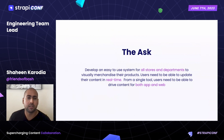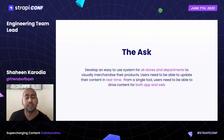This is where Strapi fits into the equation. In order for stores to visually merchandise their products, they needed a system to update their content in real time. With all hands on deck rewriting our app and website, we needed to leverage a solution that would allow us to move quickly with little engineering effort. Without Strapi, I firmly believe we would not have hit our deadline.